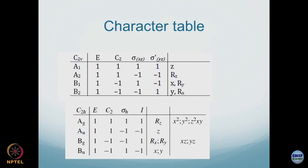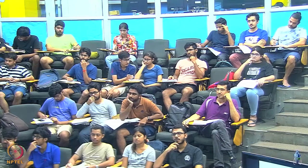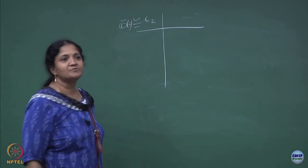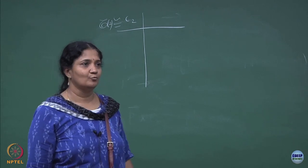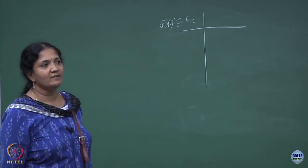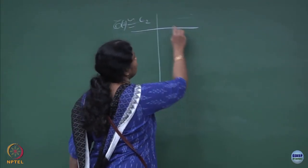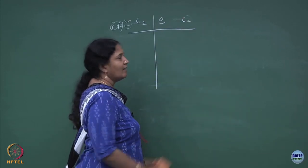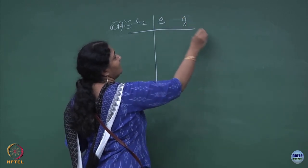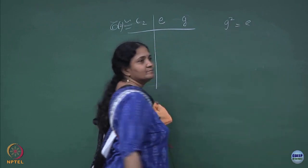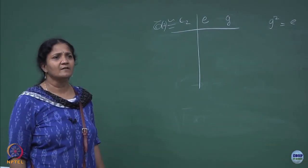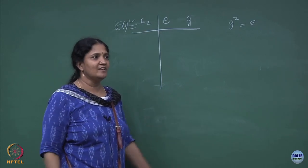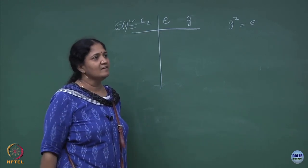Let me give a small example using the C2 character table. C2 is isomorphic to the permutation of two objects, and also isomorphic to a group with just a single mirror. The number of elements is just E and C2. You can write this as a general group element g such that g squared equals E - that is the condition for an order-2 group. All such groups are isomorphic: you can treat it as a permutation group, a C2 group, a mirror group with σv, or σh.